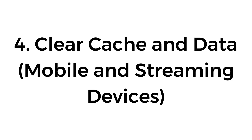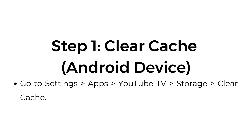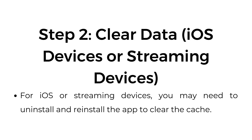Number four: clear cache and data. Clearing the cache and data can help resolve issues related to the app's performance. On Android, go to Settings > Apps > YouTube TV > Storage > Clear Cache. For iOS or streaming devices, you may need to uninstall and reinstall the app to clear the cache.